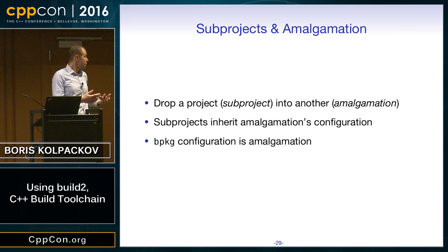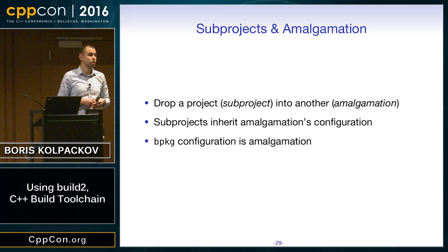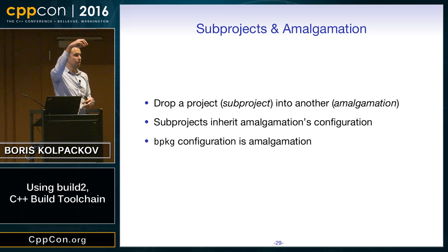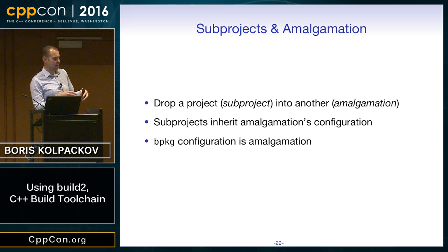Sub-projects and amalgamation provide support for bundling things together. You drop one project into another — the outer one becomes an amalgamation, the inner one becomes a sub-project. Import machinery automatically finds things from sub-projects, and sub-projects start inheriting configuration from the amalgamation. The bpkg configuration directory is actually an amalgamation. Knowing this, you can actually do some cool things: build little test programs in the bpkg configuration and automatically find all the packages installed in there.